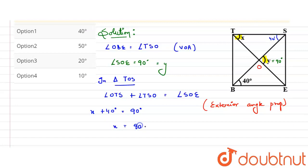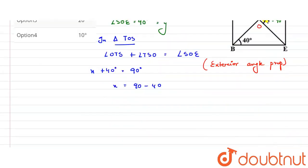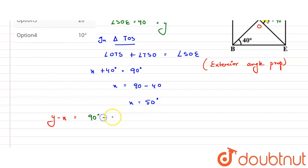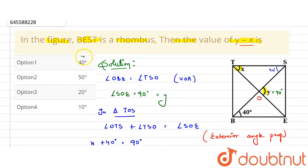So, x equals 90 minus 40, which is 50 degrees. Now, what we need to find is the value of y minus x. Putting in the values: y is 90 degrees minus x, which is 50 degrees. So, 90 minus 50 is 40 degrees. Therefore, 40 degrees is the value of y minus x, which corresponds to option number one. That is the right choice. Thank you.